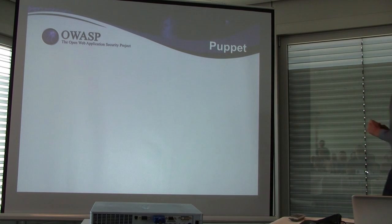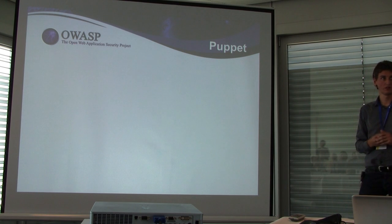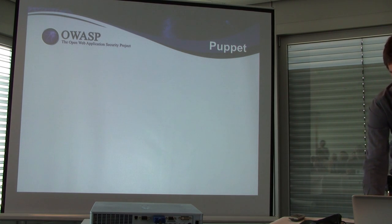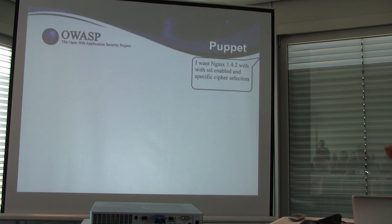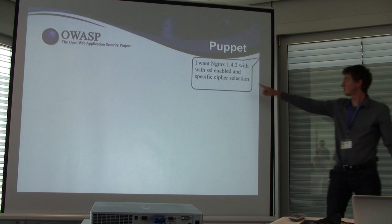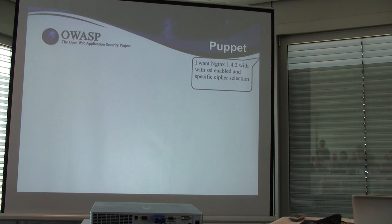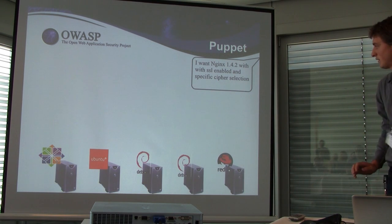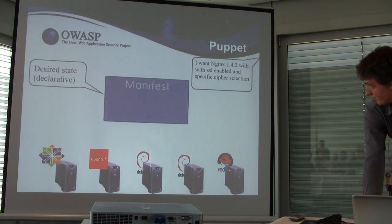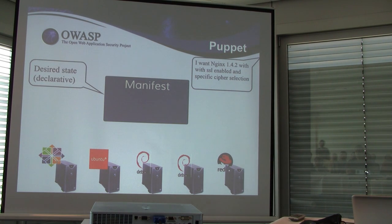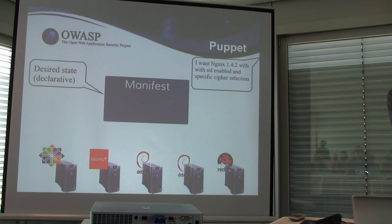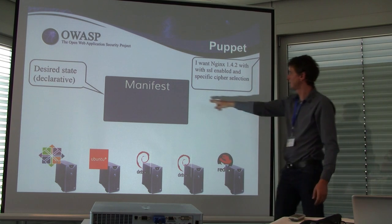More concretely, we are going to use Puppet in the demos. The example is: set up a server with Nginx version 1.4.2, with SSL enabled and a specific cipher selection for secure ciphers, applied on a bunch of servers. In Puppet, you describe the desired state you want the server to be in — it is not a script or a set of steps, but a declarative description in manifests or recipes.